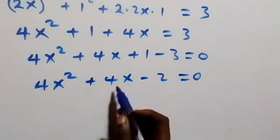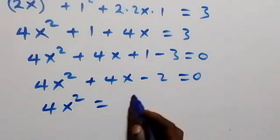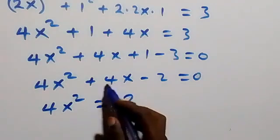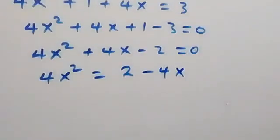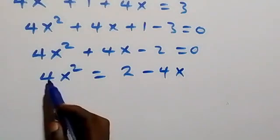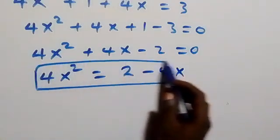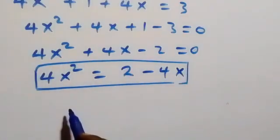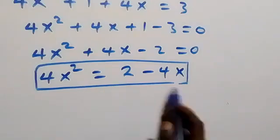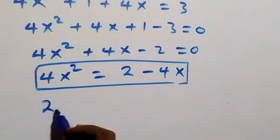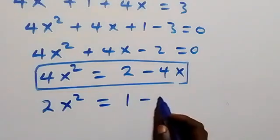When we separate and rearrange, we have 4x squared equals to 2 minus 4x. We can reduce this by dividing through by 2, and this becomes 2x squared equals to 1 minus 2x. We will keep using this relation going forward.